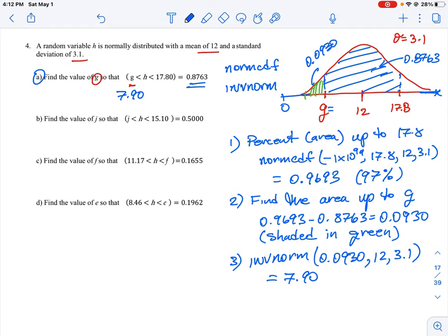That means if we take this variable and we shade in the area between 7.90 and 17.8, we will cover 87.63% of the distribution. So a little bit more involved to do. What you first have to do is find the total area up to one of the endpoints and then subtract the shaded area from that to find the remaining or the missing chunk of the area. And then you put that missing chunk of the area into the inverse norm function to find the lower boundary point that it represents.